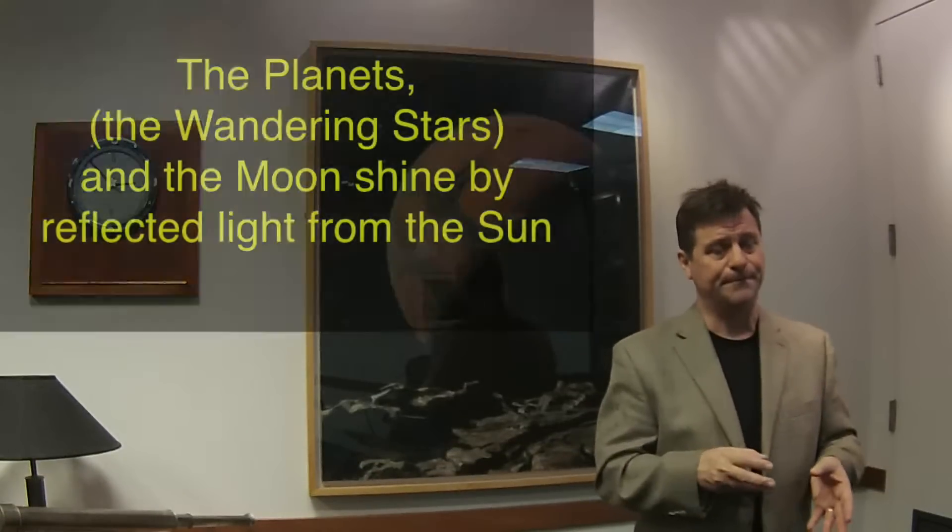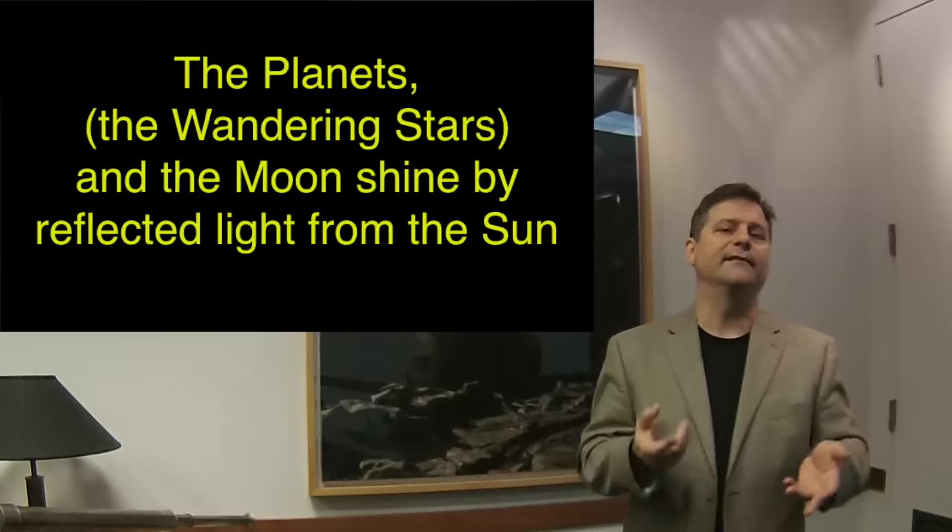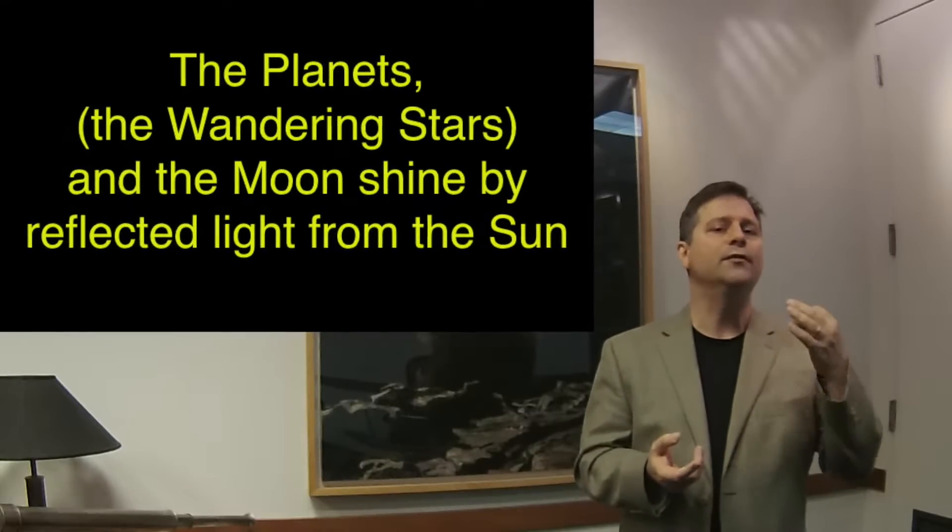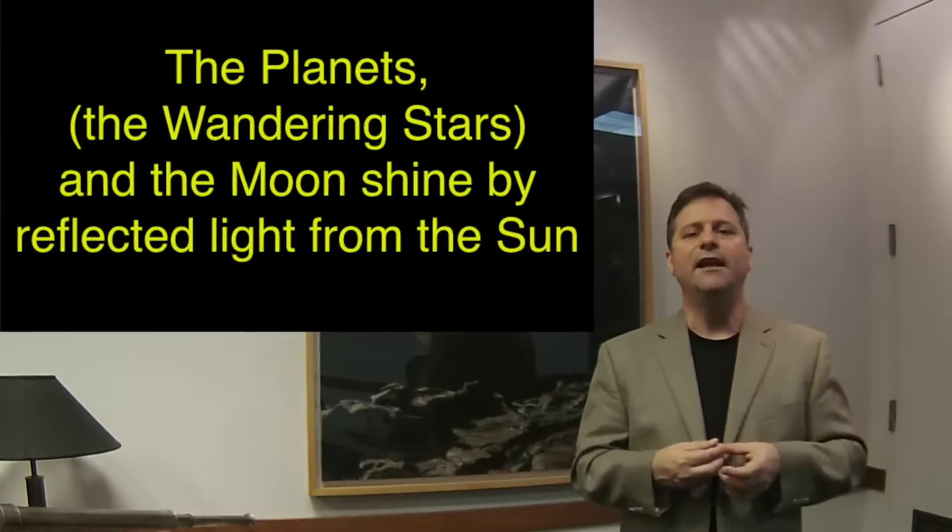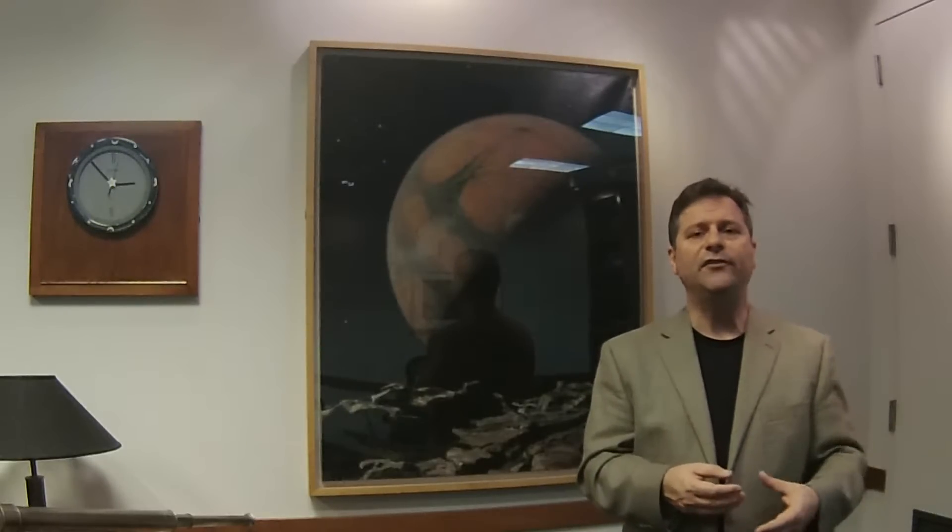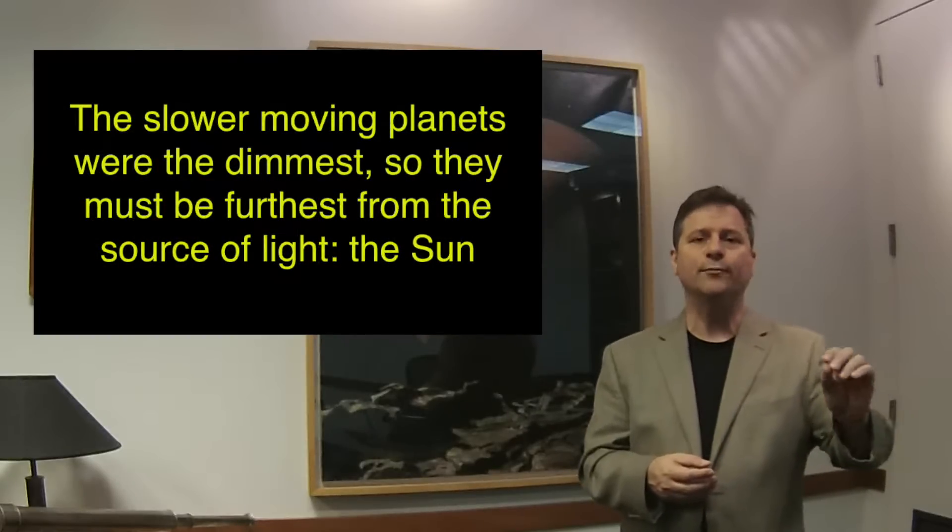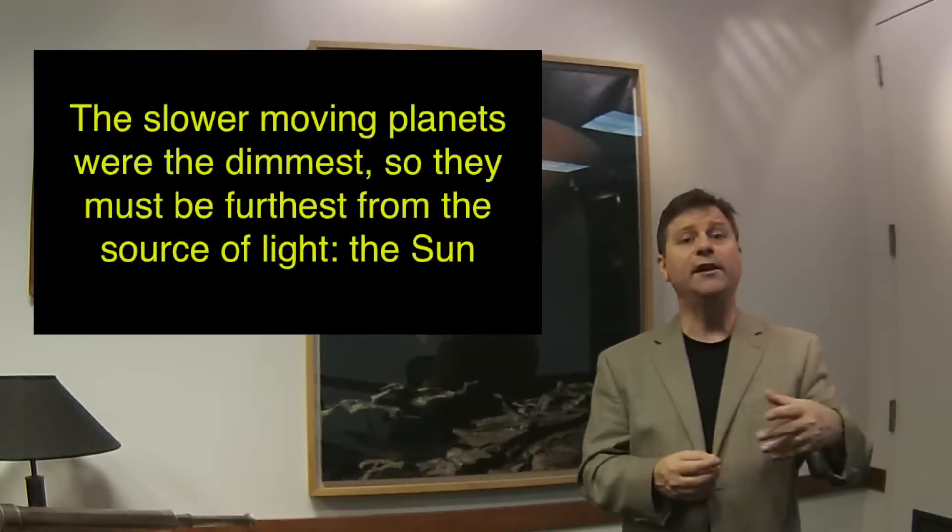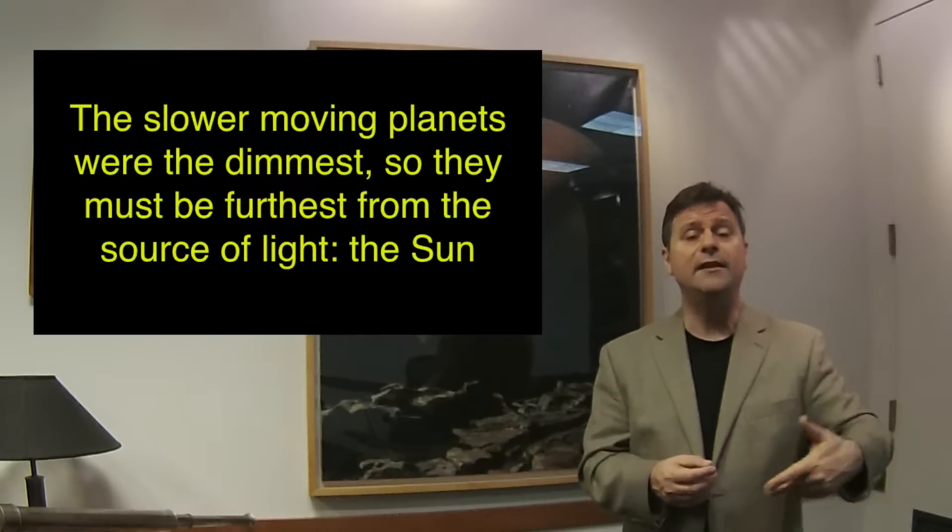We also know, or at least appear to know, that the planets reflect light. They don't have their own light. Now that is an interesting statement in and of itself, and it's hard to really determine that from the sky. But the ancients thought and noticed that the slower moving planets were also the dimmest. So they reasoned that, hey, if they're the dimmest, they must be the furthest.